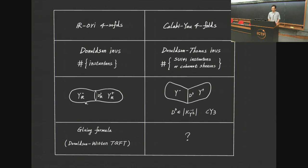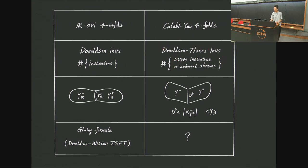We are interested in the complexification of this framework. We consider complexification of real-oriented four-manifolds, which is a complex four-fold with a holomorphic volume form — so we are considering Calabi-Yau four-folds. The analogy of Donaldson invariants in this case is so-called Donaldson-Thomas invariants, which count similar instantons, but so-called Spin(7) instantons, because this is a Calabi-Yau four-fold. Being in the algebraic geometry setting, we can also count coherent sheaves on these Calabi-Yau four-folds.